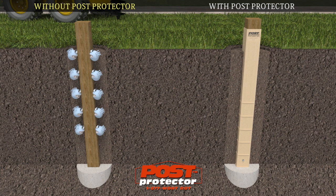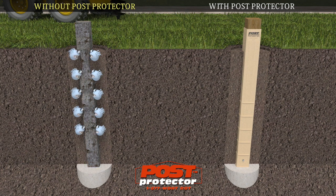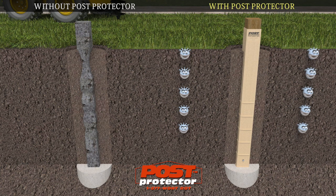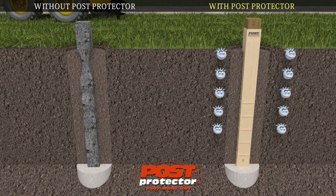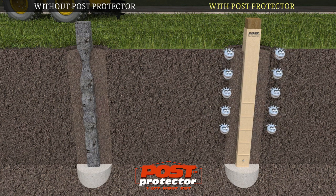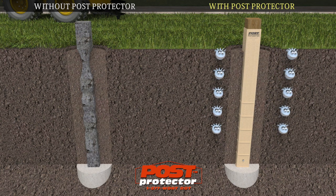When an unprotected post is placed in the soil, it's only a matter of time before these wood-destroying organisms find their way around or through chemical preservatives, causing decay. The Post Protector Barrier System will substantially increase the life of any post by acting as a new line of defense separating the wood from attacking organisms, while preventing chemical preservatives from leaching into the environment.